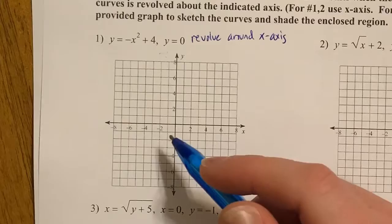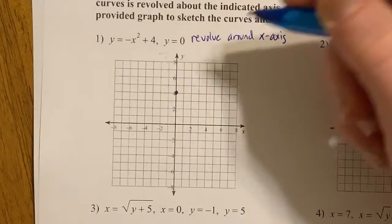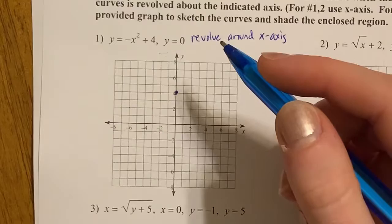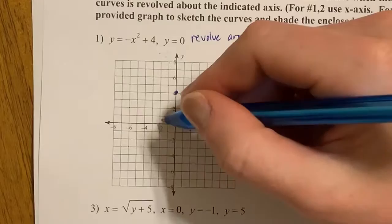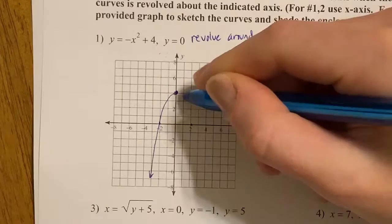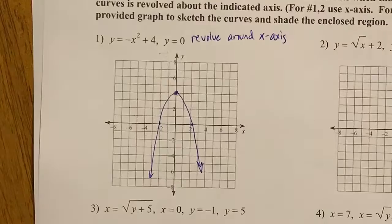First thing I want to do with any volume problem is draw the region so I can tell what's happening. So this is a parabola, shifted up four. Here's four and it's negative x squared, so it is going to be going down. Let's figure out what our x-intercepts are. So if y is zero, then this is going to be negative two and two.